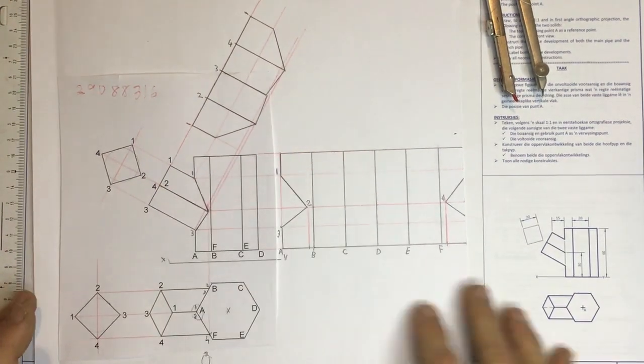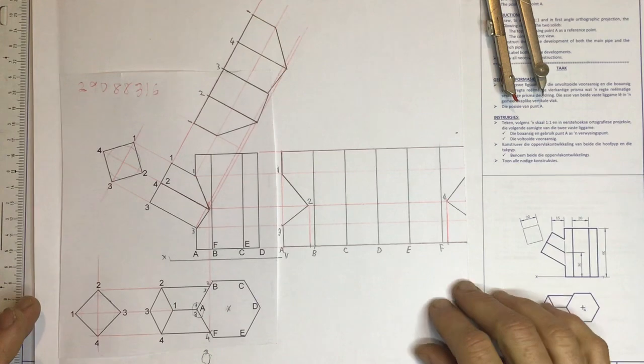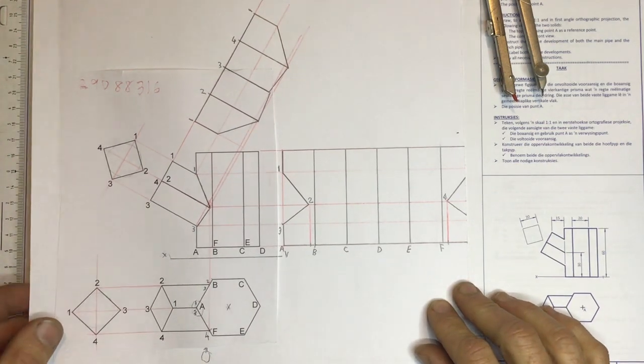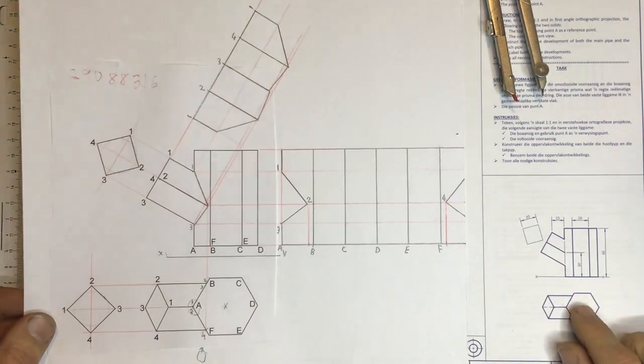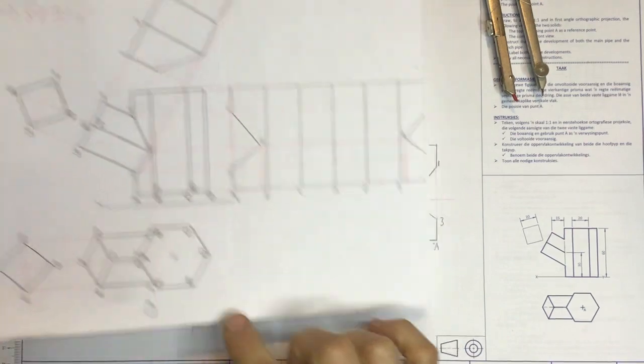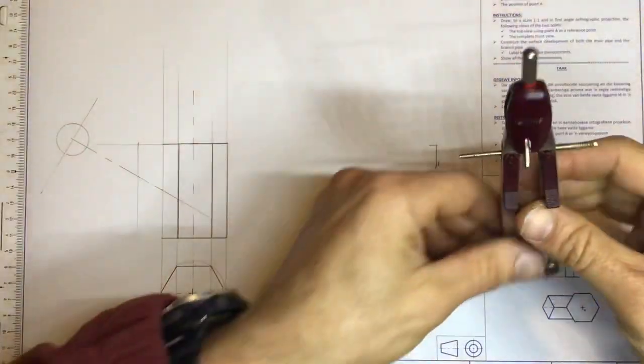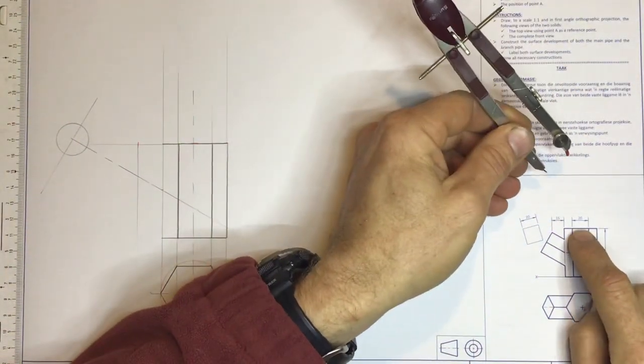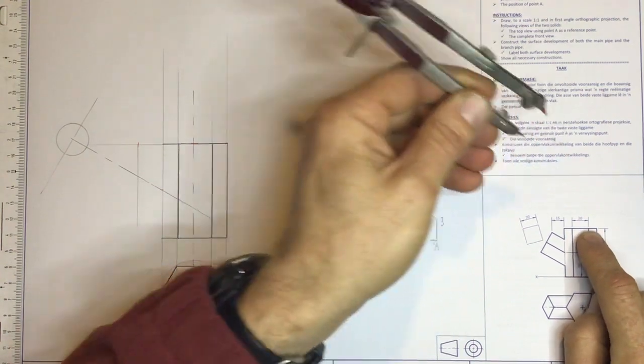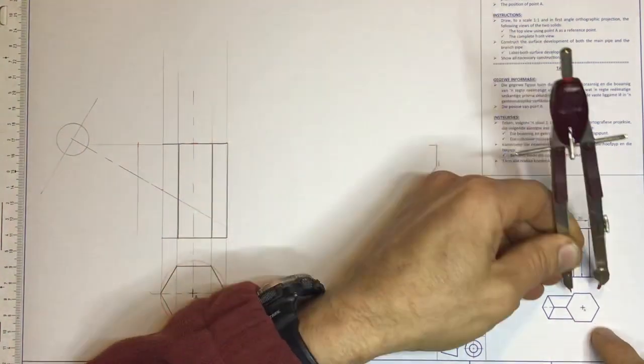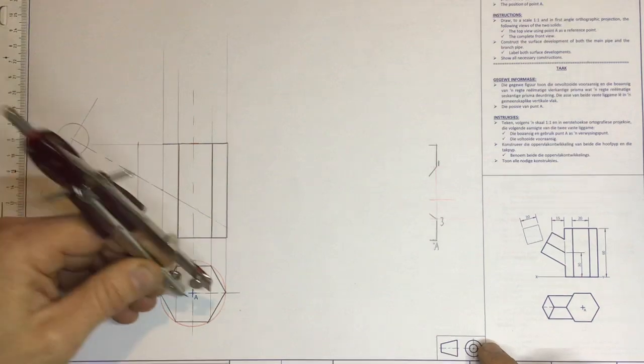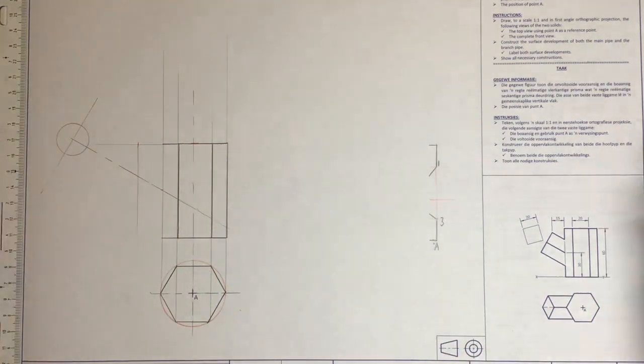To be able to do the development, they obviously want you to be able to do the constructions over here. Drawing the hexagonal part, I don't think that you'll have too many issues with that. They tell you that you've got a side length of your hexagon of 20 millimeters. So I set my pair of compasses to a side length of 20 millimeters.